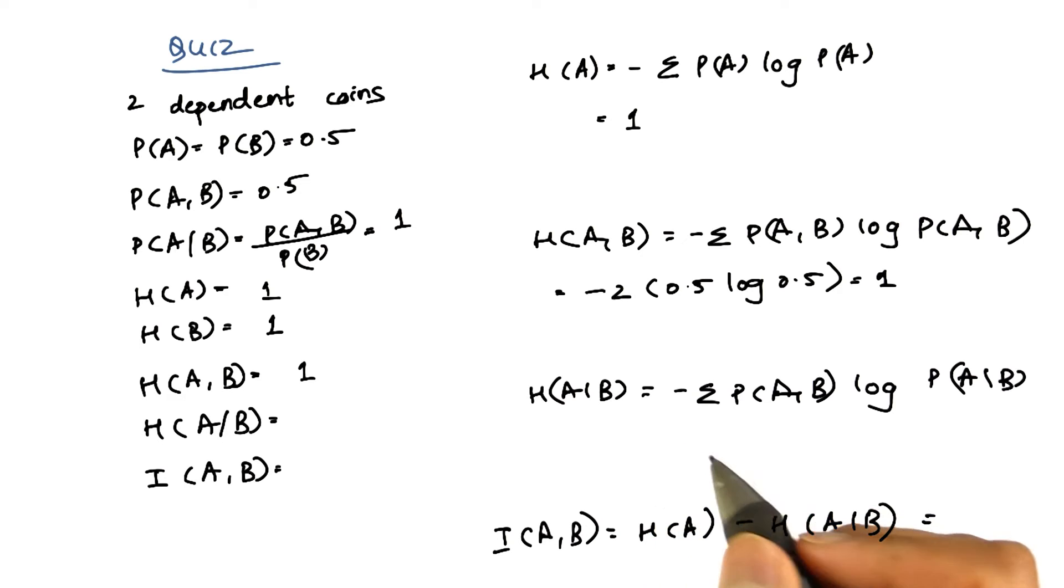What is the conditional entropy? The conditional entropy is given by this formula. Let's substitute the values to find out what we get. Okay, the conditional entropy comes out to be 0.